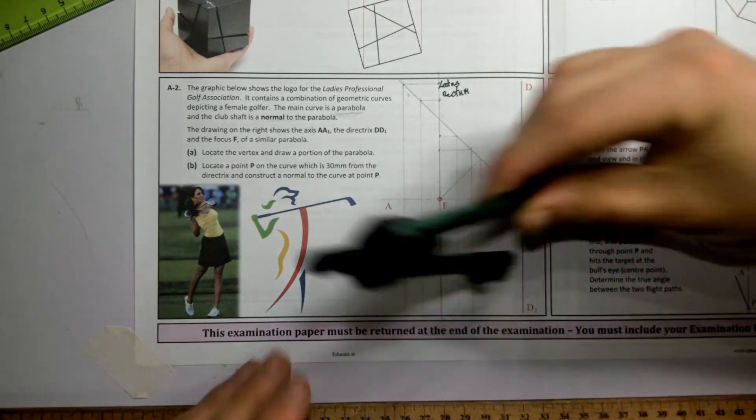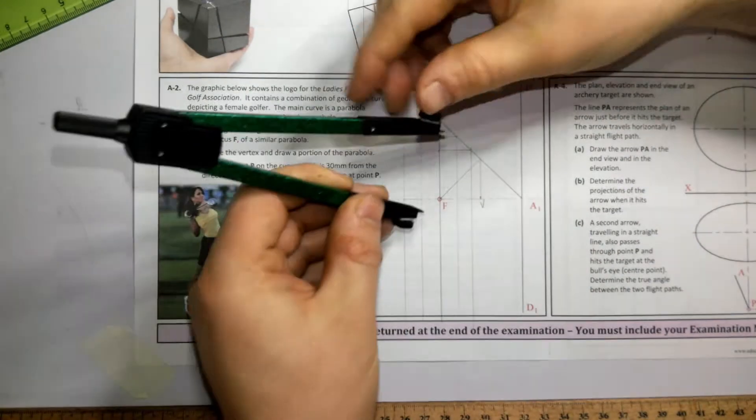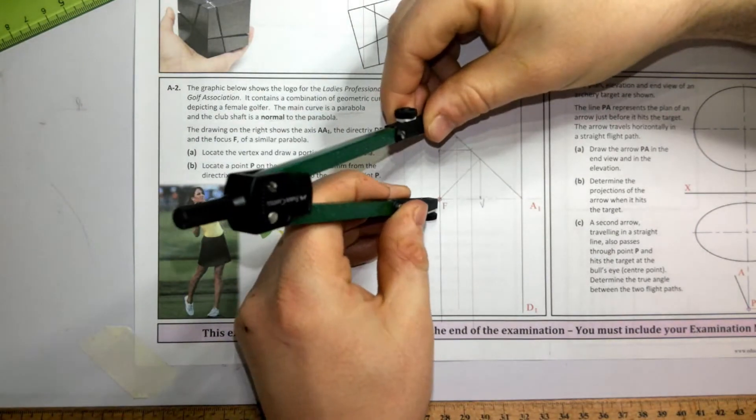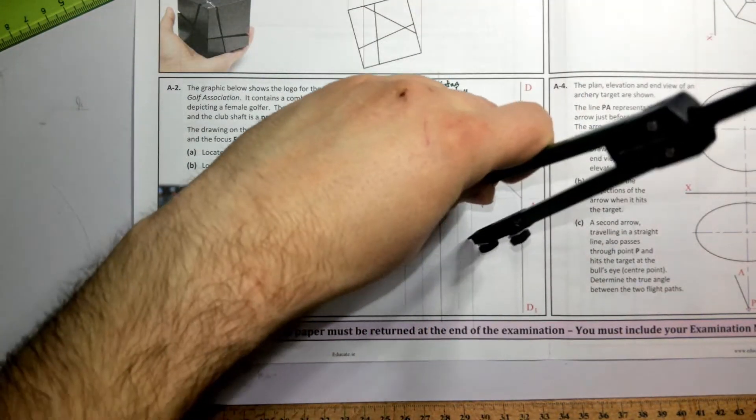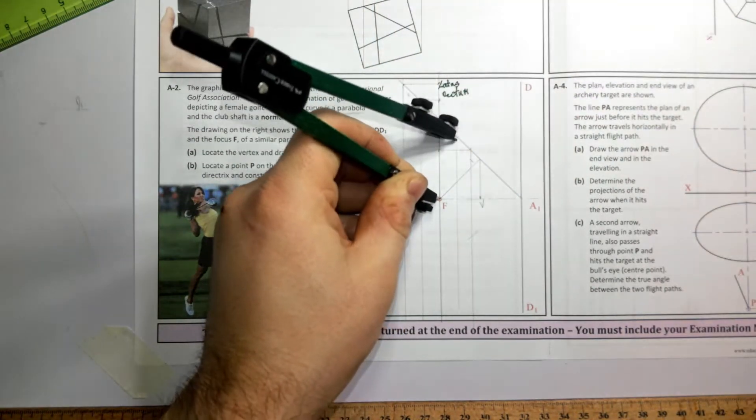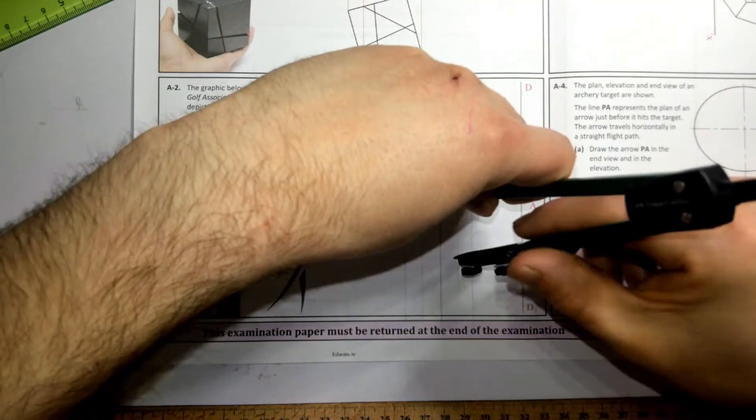We're going to take our compass, put our compass on F. Bring the nib to the first horizontal line and swing to the first vertical line, on the top and bottom. To the second horizontal line, swing to the second vertical line, top and bottom.